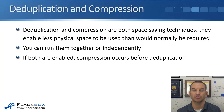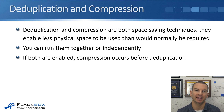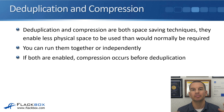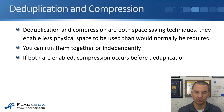Deduplication and compression are both space-saving techniques. They enable less physical space to be used than would normally be required. You can run them together or independently — just deduplication or just compression. But typically, where you've got either of them enabled, you will be running both at the same time. When both are enabled, compression runs before deduplication.